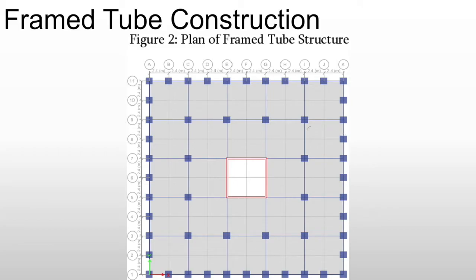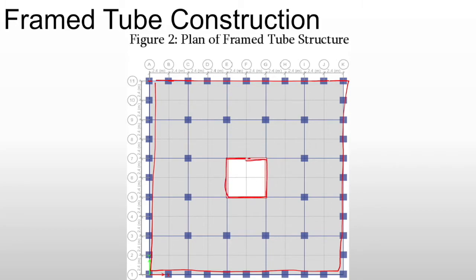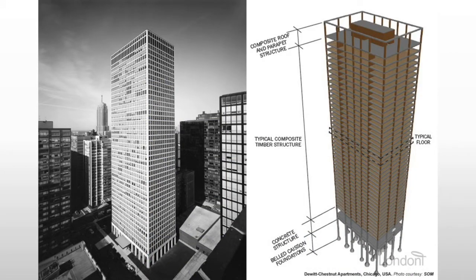When we get to framed tube construction, these elements on the facade will now be structural. Basically, you're using the exterior facade to frame in the smaller central tube where all of our elevators exist. That's why it's called framed tube — one exists within the other. This is a fairly common form today.